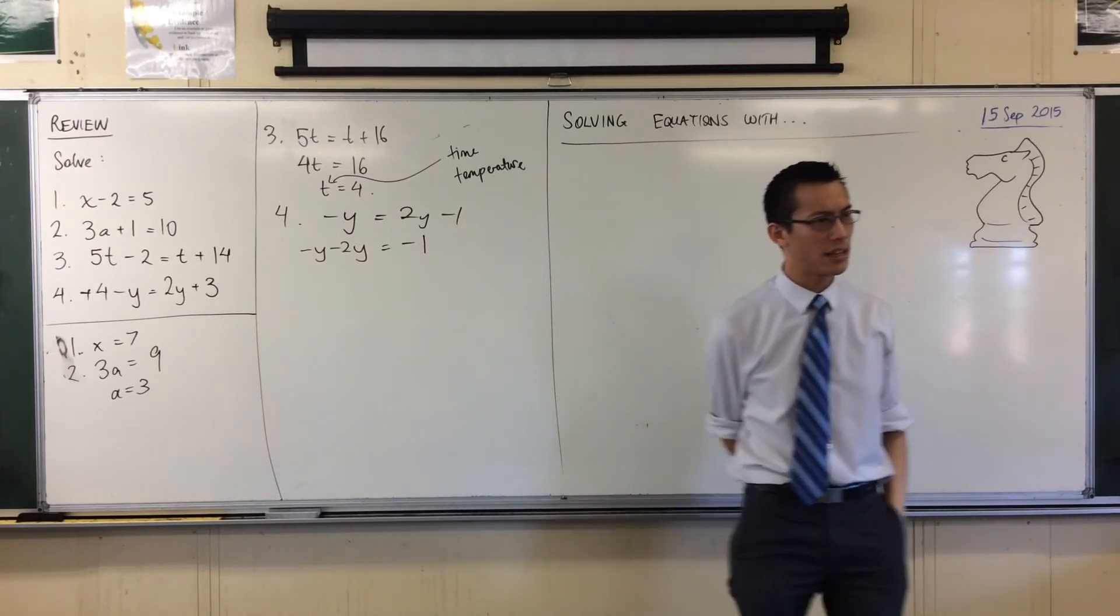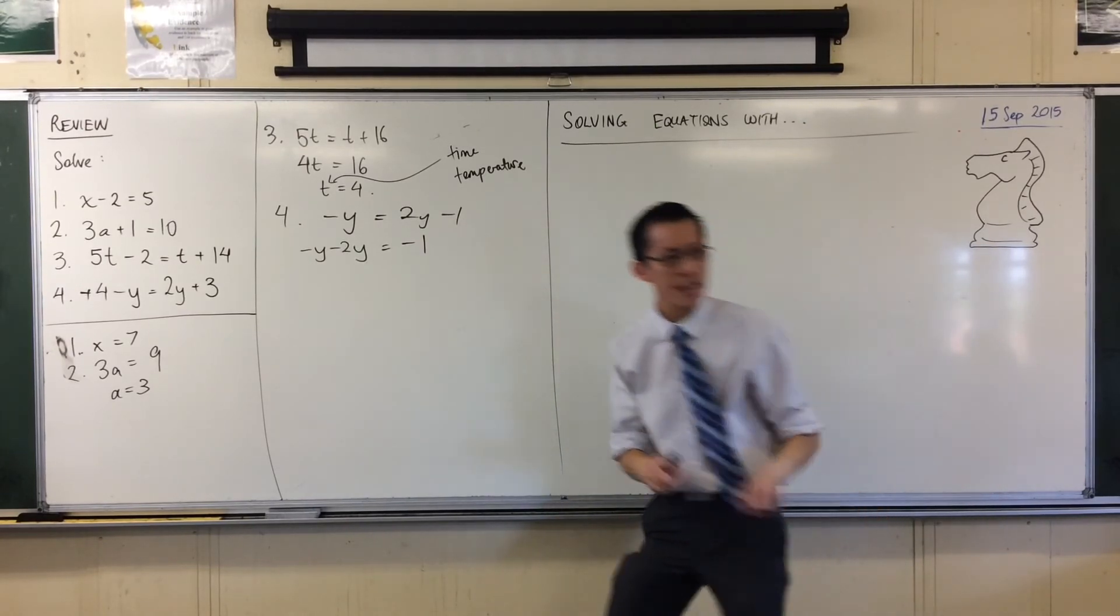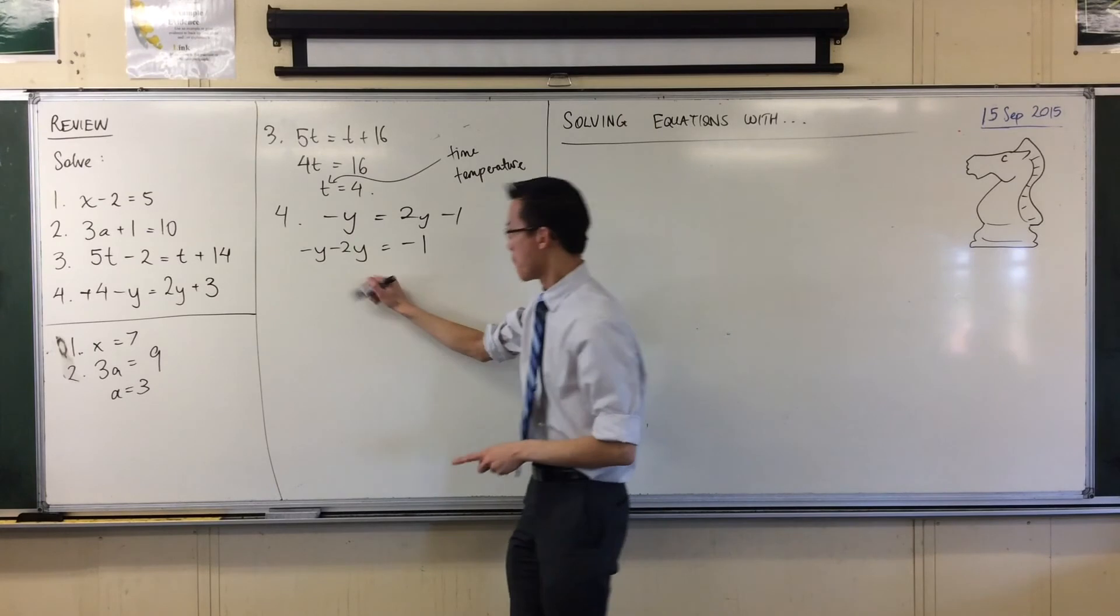And then here, 2y minus 2y, that's just going to disappear, leave me with minus 1. So what have I got on the left there? Minus y, that's negative, and then I go even more negative, right?